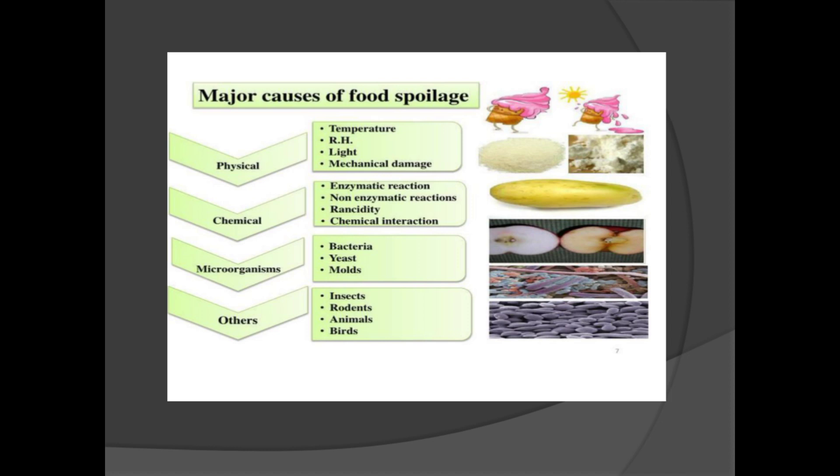Major causes of food spoilage. Physical causes include temperature, moisture, light, and mechanical damage. Chemical causes include enzymatic reactions, non-enzymatic reactions, rancidity, and chemical interactions.